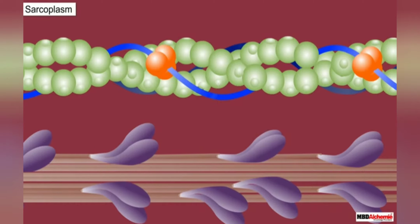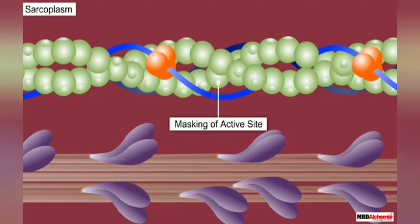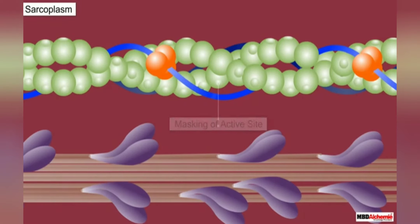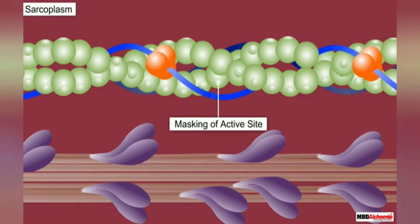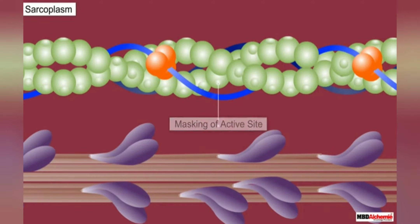When the muscle is relaxed, the active site remains covered with the tropomyosin and troponin complex. Due to this, myosin cannot interact with the active site of actin and therefore contraction cannot occur.